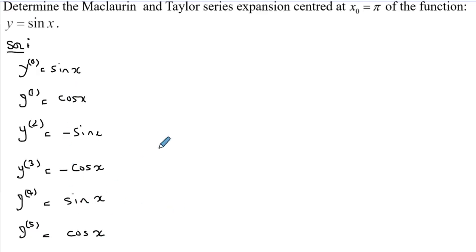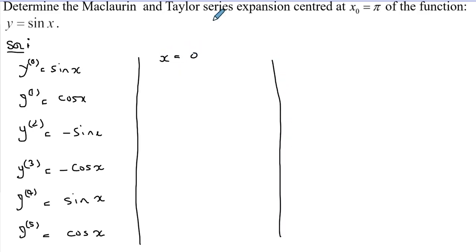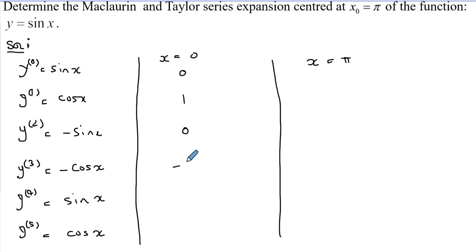Since I need both Taylor and Maclaurin series expansions, for Maclaurin I need x = 0, and for Taylor I need x = π. Computing the values: sine(0) = 0, cos(0) = 1, then 0, then −1, then 0, then 1 — those are the values for x = 0.